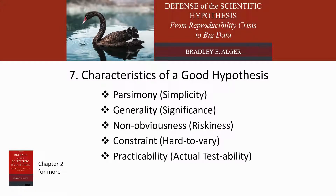The five characteristics of a good hypothesis that I want to review and explain in this video are: parsimony, also called simplicity; generality, or significance; non-obviousness, which has been called riskiness; constraint, which the physicist David Deutsch refers to as the hard-to-vary criterion; and finally, practicability, or actual testability.